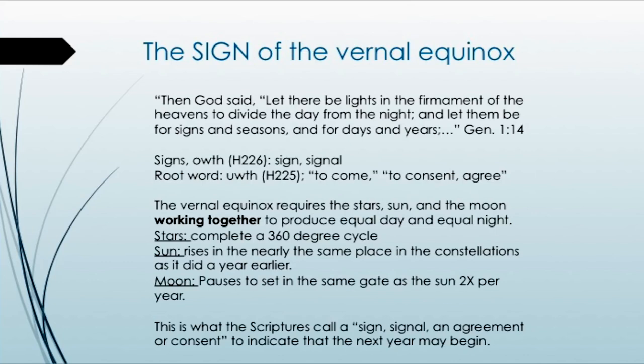The sign of the vernal equinox. Then Elohim said, 'Let there be lights in the firmament of the heavens to divide the day from the night, and let them be for signs and seasons and for days and years.' Genesis 1:14. 'Signs,' or oat — Hebrew 226 — means a sign or a signal. The root word is oof, Strong's 225, and means to come, to consent, or agree. The vernal equinox requires the star, sun, and the moon working together to produce equal day and equal night.